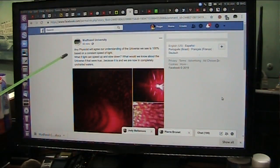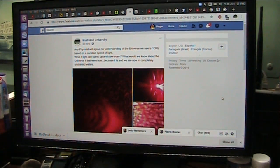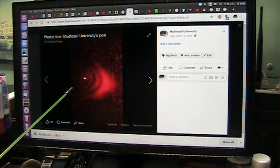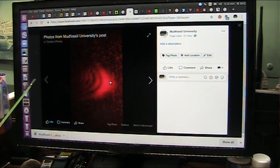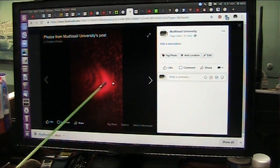I posted on Mud Fossil University on Facebook today. Any physicist will agree our understanding of the universe that we see is 100% based on a constant speed of light. 100% of what we see, when we look out to the stars and galaxies and all these distant things, is based on the fact that the light coming to us is going at exactly a certain speed. And that is just not right. That is light coming through a pulse red laser, just floating through, exciting all the electrons in front of it. They're glowing, but there's only one tiny dot.